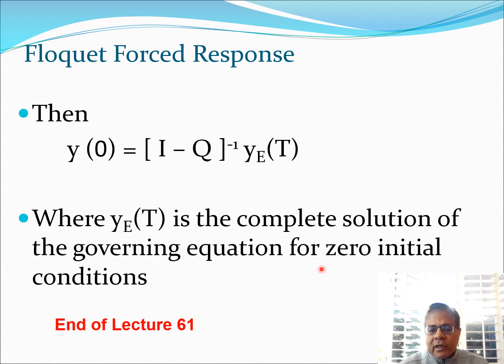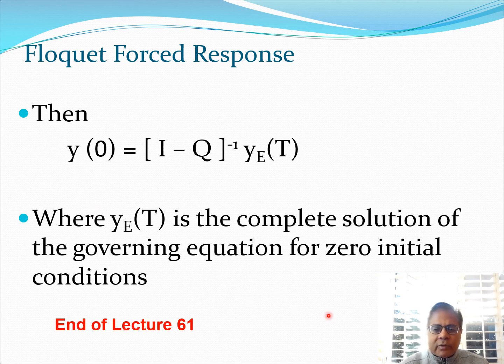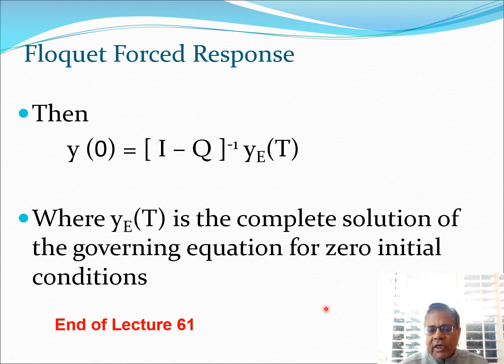We need to do that once, and once we are done with that we have calculated y_E(t). We need to calculate the transition matrix and then we can get this set of initial conditions. When we use these initial conditions on the problem of the periodic differential equation, we are going to get straight away the steady state response of the problem. Like I said many times, you are only interested in the steady state response, and in those cases you can use the Floquet forced response approach. In case you have already calculated the transition matrix for stability, you can reuse that in this particular situation.